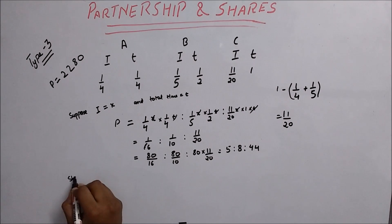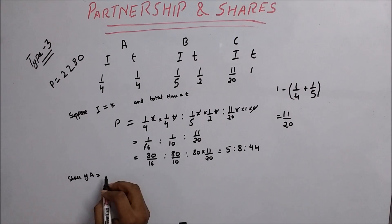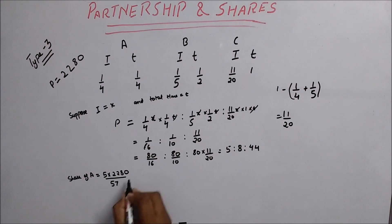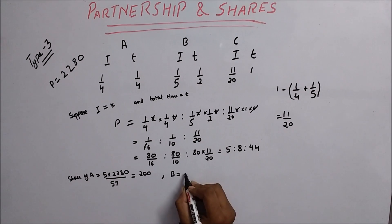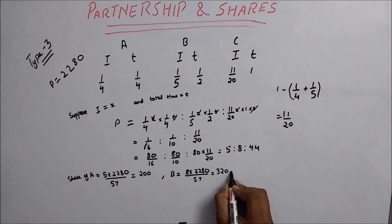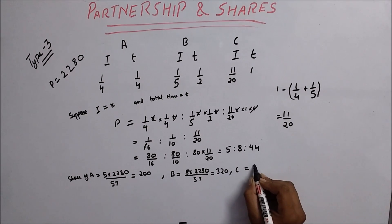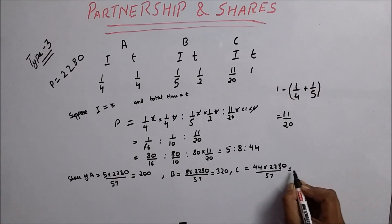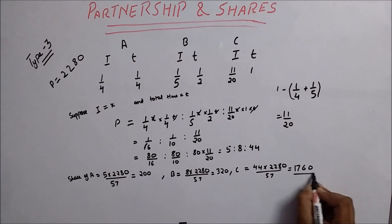Now we need to calculate the share of A. Share of A equals 5 × 2,280 divided by 57, which equals 200. For B, 8 × 2,280 divided by 57 equals 320. For C, 44 × 2,280 divided by 57 equals 1,760. This is your answer.